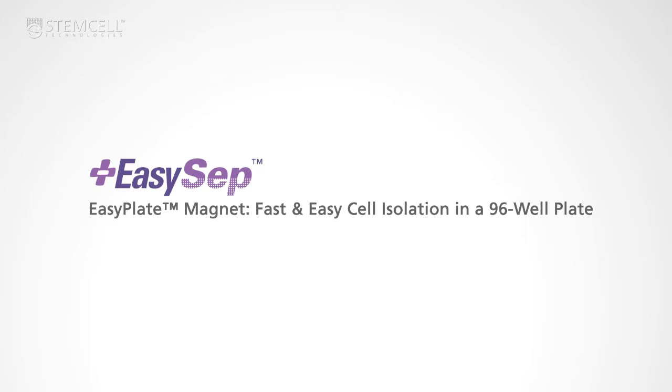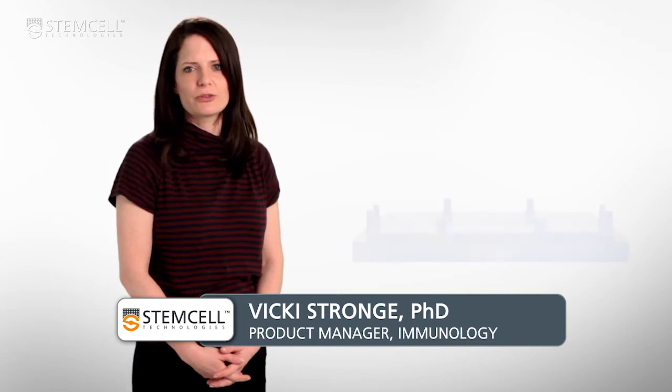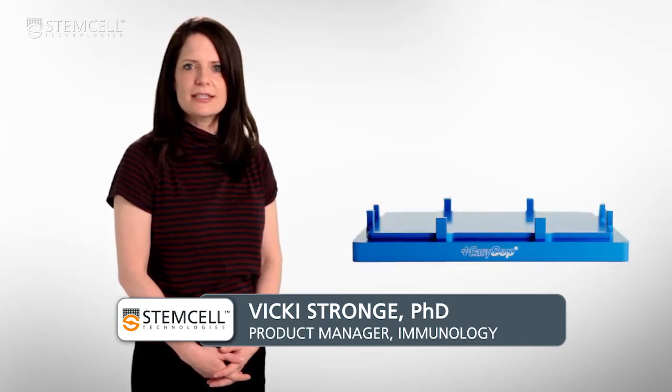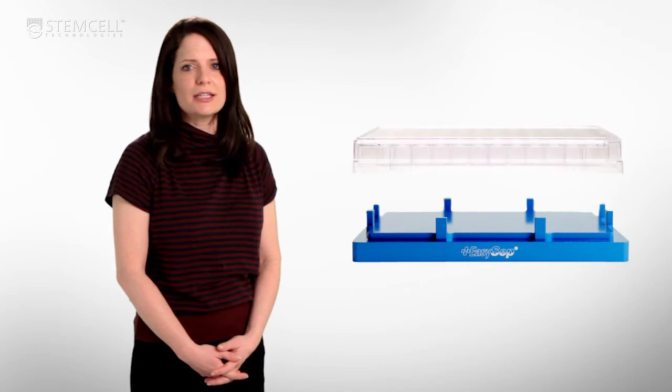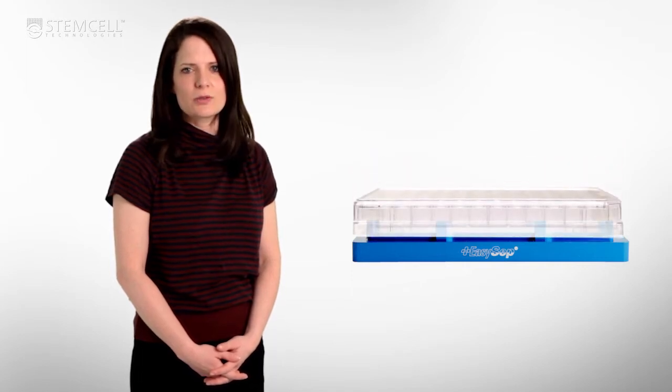Small-volume, high-throughput cell isolation is often required for both immunoassay development and immunology research. The EasyPlate EasySep magnet isolates untouched cells quickly and easily in a standard 96-well plate.